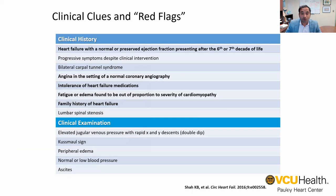In the clinical setting, one should suspect amyloidosis in anyone that has a thickened heart who presents with heart failure where the ejection fraction is normal. The more common types of amyloid occur later in life — the sixth, seventh, or eighth decade. Patients may mimic symptoms of heart attacks and have chest pain. They may not tolerate usual heart failure medications because of low blood pressure, and will report fatigue and edema that doesn't respond well to medications and is out of proportion to what the cardiac dysfunction appears to be on imaging. Patients with hereditary variants may also report a family history of heart failure.